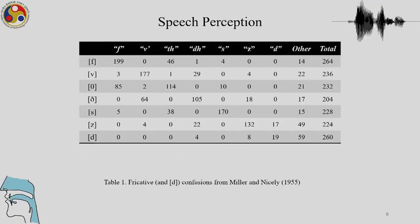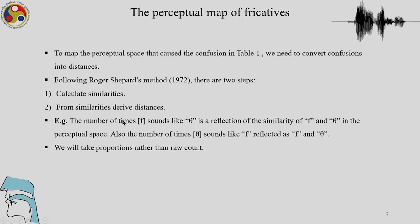To map the perceptual space that caused the confusion — 'v' was heard as 'f', 'th' was heard as 'f' — we need to convert these confusions into distances. The mathematician Roger Shepard devised a way to do this: we calculate similarities, and from similarities we derive the distances. The number of times 'f' sounds like 'th' is a reflection of the similarity of 'f' and 'th' in the perceptual space.